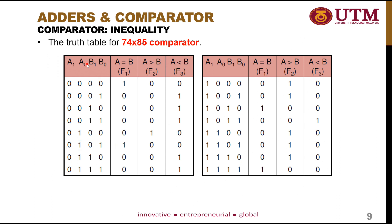In the next example, A1 equals 0 (MSB) and B1 equals 1. From this comparison, A1 is less than B1. We don't need to check further — the output A less than B becomes 1 regardless of what A0 and B0 are, because the higher significant bit already determined the result.